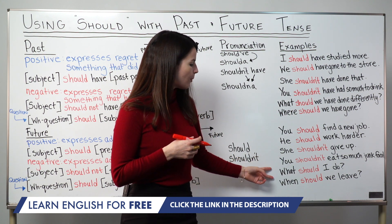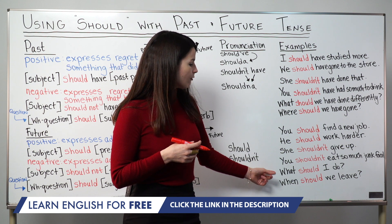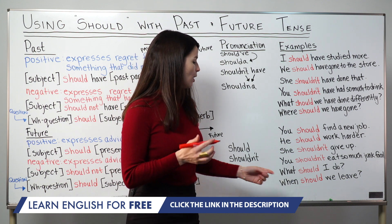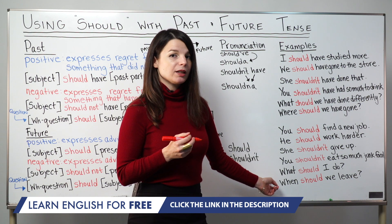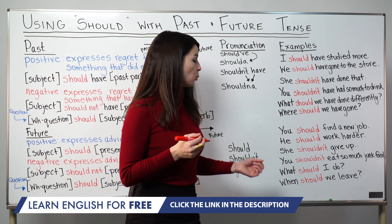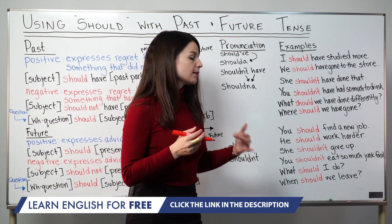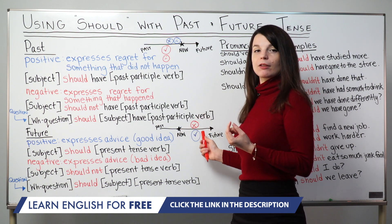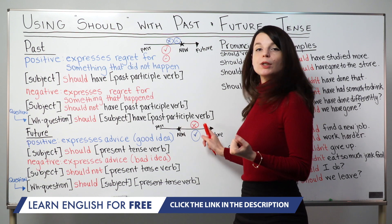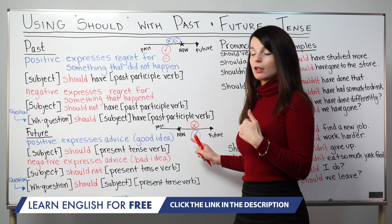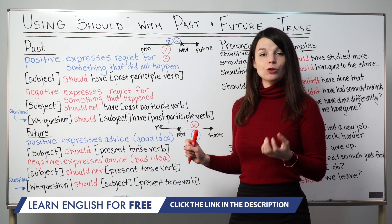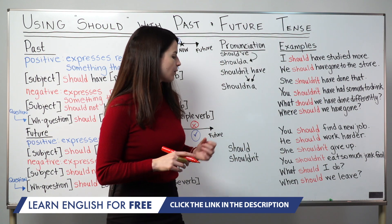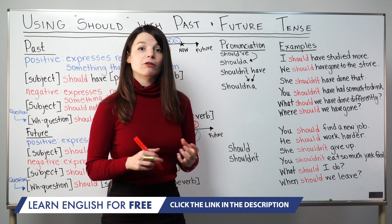Let's finish with some questions. First: What should I do? — a very common advice question. And: When should we leave? These ask for advice about the future — what do you think? What's your opinion? What should I do means: what do you think is a good idea for me going forward? When should we leave means: what time do you think is a good time to leave? So we can use these kinds of questions to ask for future advice.